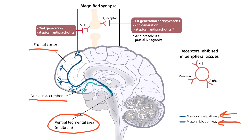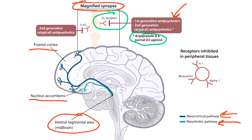Many psychotic symptoms are related to problems with these pathways. To help illustrate why these pathways are important, we've magnified a synapse. This box on the right shows first and second-generation or atypical antipsychotics. Both first-generation and second-generation antipsychotics can be used to block dopamine-2 receptors. But note that one of these second-generation or atypical drugs, aripiprazole, is actually a partial agonist, not an antagonist.